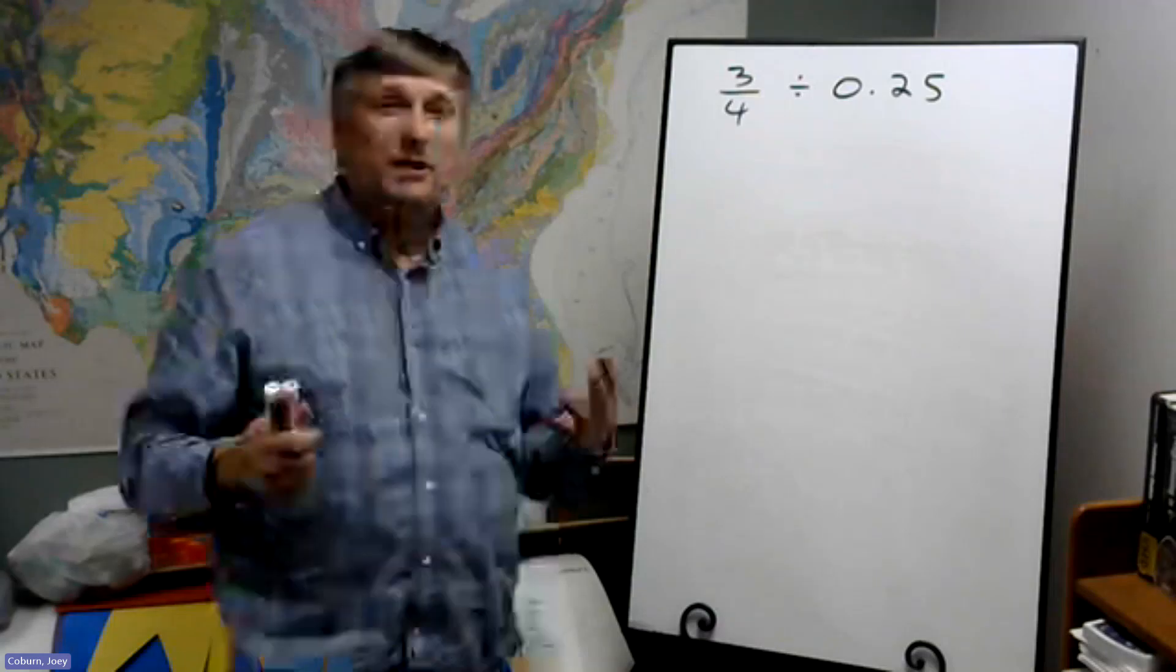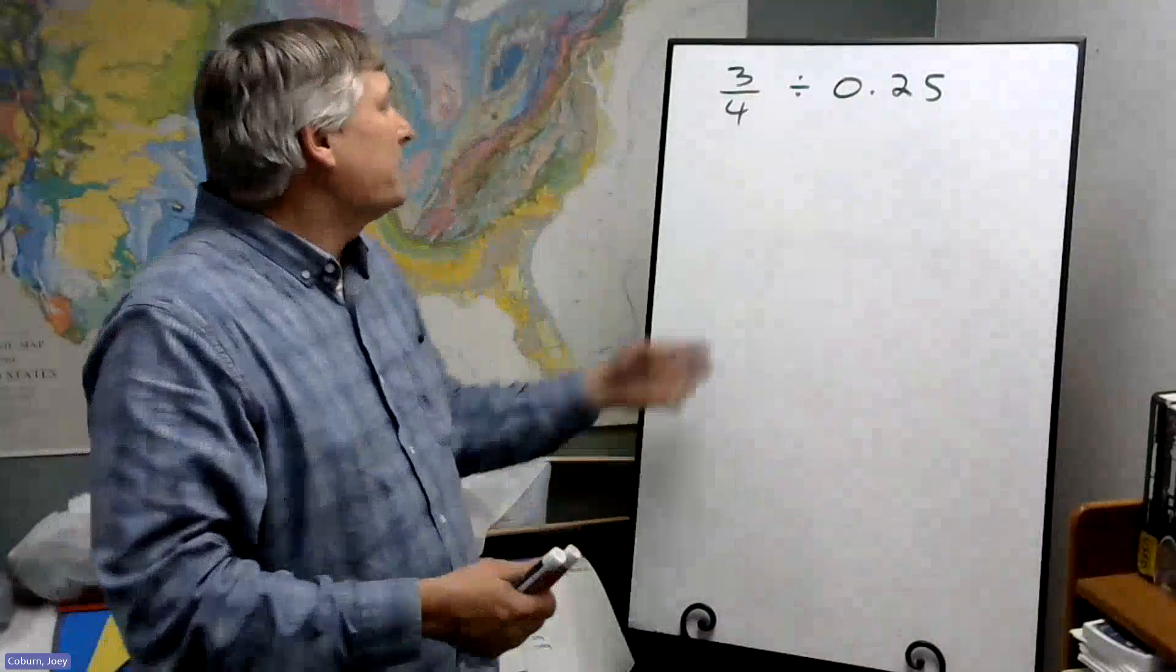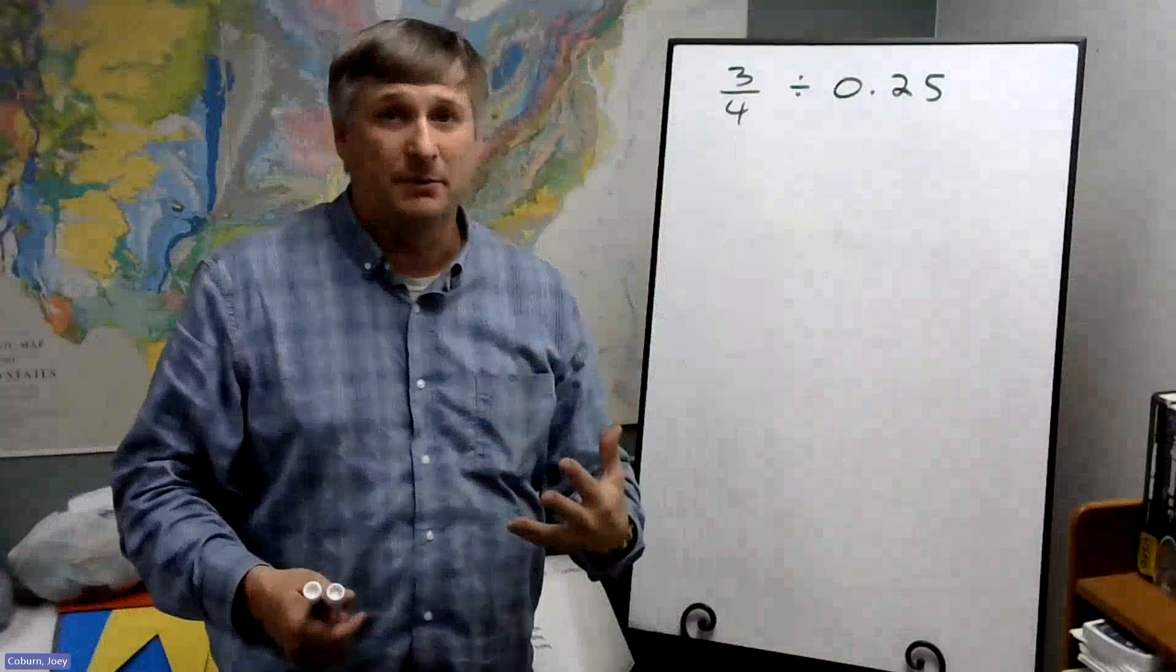Now, suppose we have something like this: three-fourths divided by 0.25. Well, again, let's convert this into a decimal number.